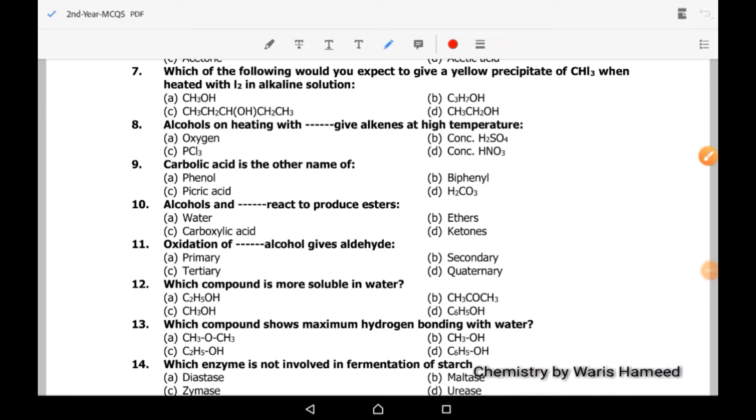Moving to MCQ number 7: which of the following would you expect to give a yellow precipitate of CHI3 when heated with iodine in alkaline solution? It's actually iodoform test and it is used to differentiate between methanol and ethanol.